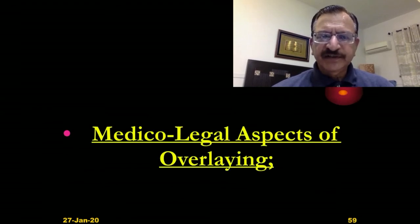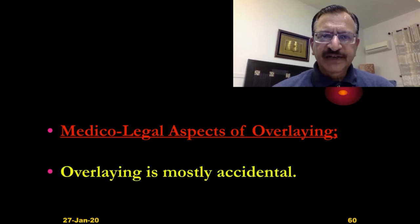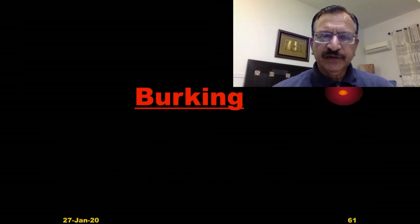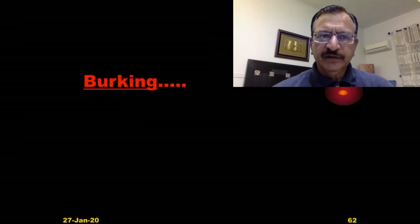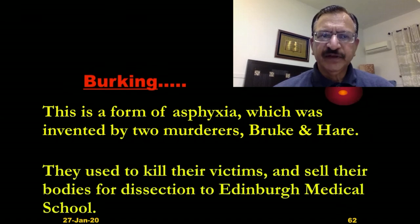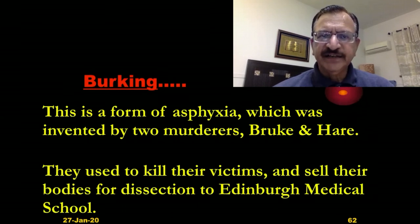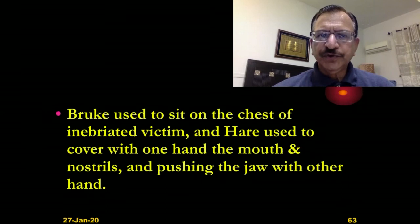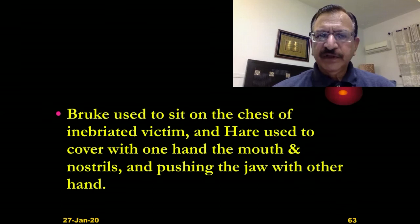The medical-legal aspects of overlaying — mostly it is accidental. Burking is a form of asphyxia invented by two murderers, Burke and Hare. They used to kill their victims and sell their bodies for dissection to Edinburgh Medical School. Burke used to sit on the chest of the inebriated victim while Hare used to cover the mouth and nostril with one hand and push the jaw with the other hand.